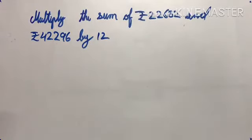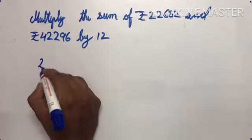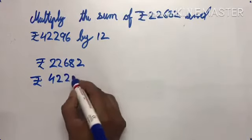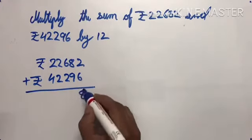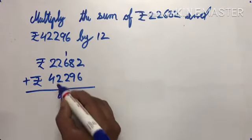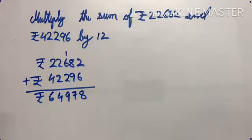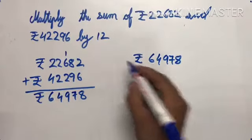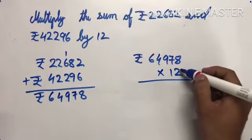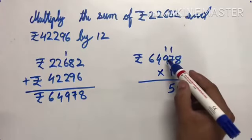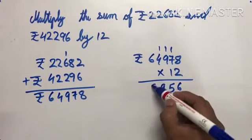We have to multiply the sum of 22,682 and 42,296 by 12. So first we will add: 22,682 plus 42,296. 2 plus 6 is 8, 8 plus 9 is 17, 6 plus 2 is 8, 7 plus 2 is 9, 2 plus 4 is 6. The sum is 64,978.